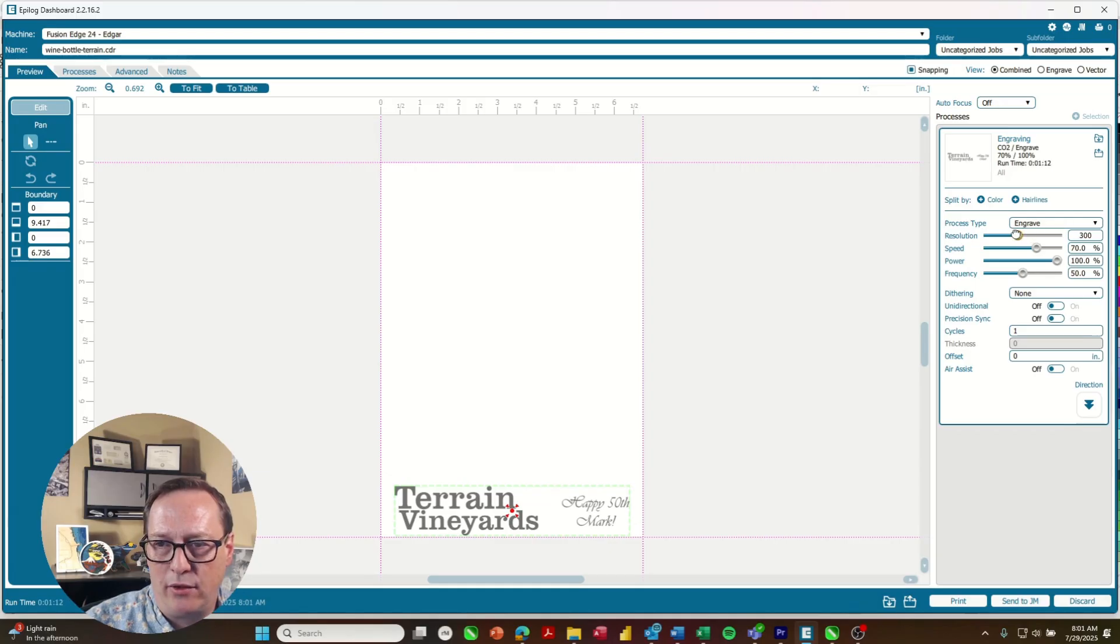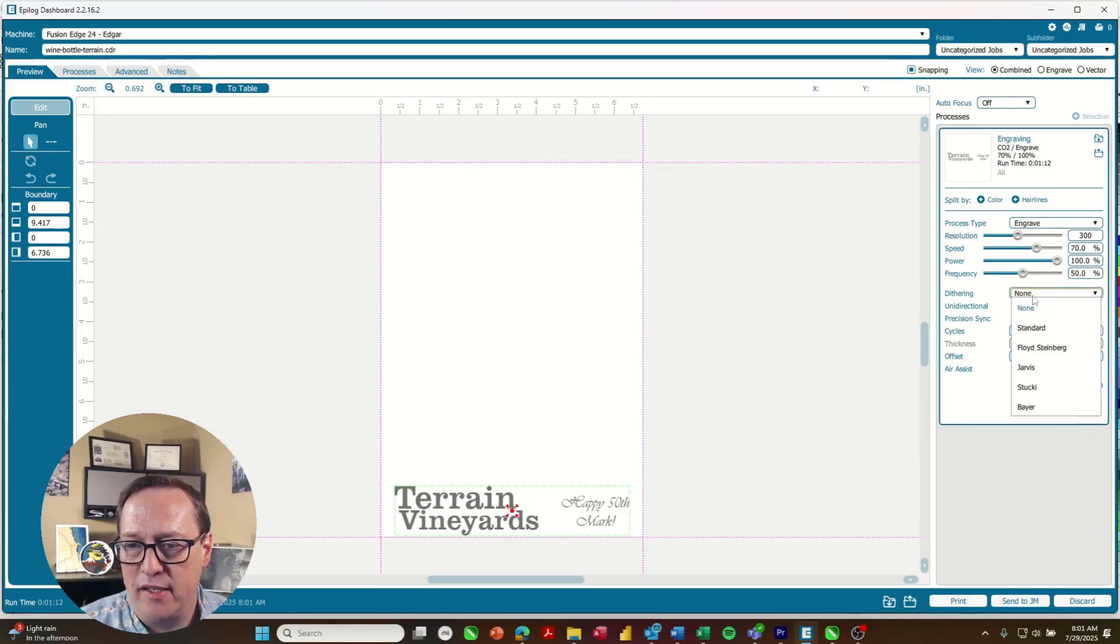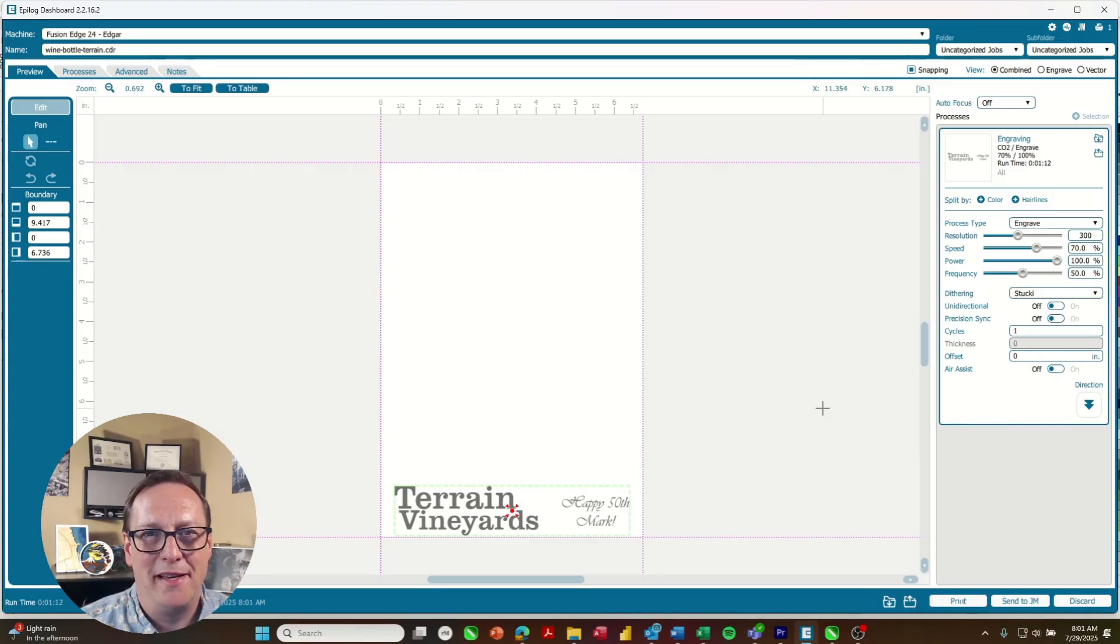I'll turn that down to 300 dpi, 70% speed, 100% power. And this is on an 80 watt Fusion Edge 24. And I'm going to set my dithering to Stucki. And click print. And we'll send that over to the laser.